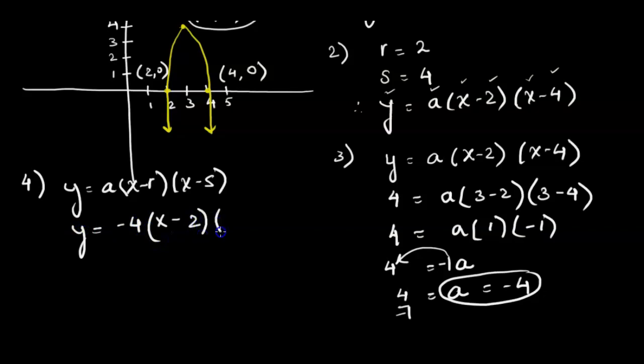This is our equation. a we got is negative 4, r we have is 2, s we've got is 4. So this is the final factored form of quadratic equation that we would write down for the given graph.